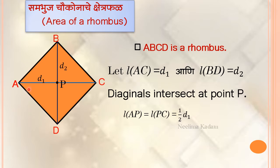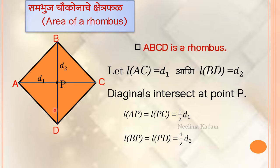Similarly, AC bisects BD. So BP equals PD equals half of BD, but BD is D2. In this way we get AP as half D1 and BP as half D2.